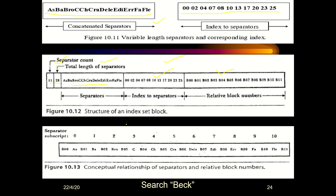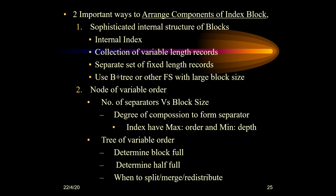The diagram shows how separators connect to relative block numbers. For example, B00 is associated with separator 'As', meaning block B00 contains keys less than 'As'. Similarly, B01 contains keys less than 'B2'. So when keys are less than 'As', we go to B00; when keys are greater than or equal to 'As', we go to B01. This explains how the relative block number is assigned for each separator, consistent with the conditions explained in the previous topic.